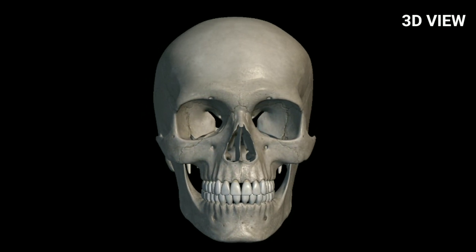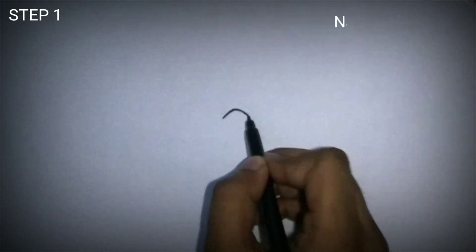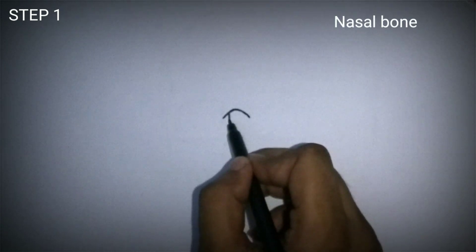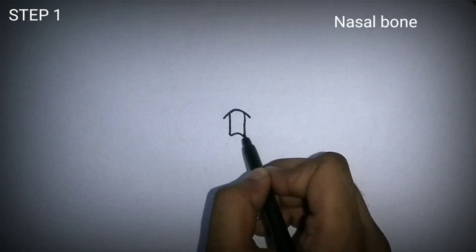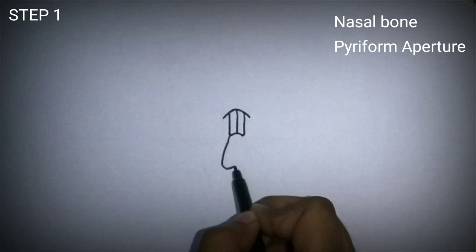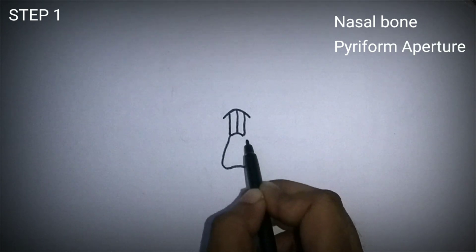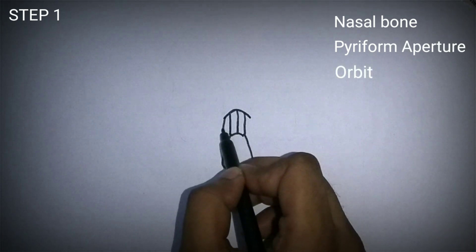Now we have got a good visual of the skull. Let us draw it. In the first step, let us draw the nasal bone, the piriform aperture and the orbit.